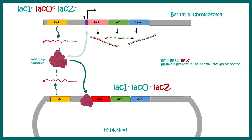The moral of the story: introducing this F' plasmid cannot rescue the constitutively active operon. Therefore, this mutation acts in cis — providing a normal DNA sequence on a separate plasmid cannot rescue the phenotype.